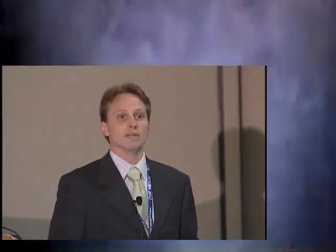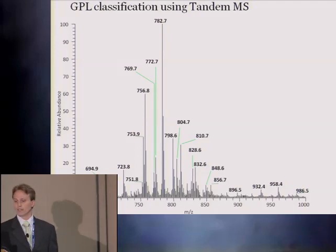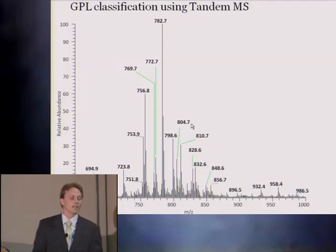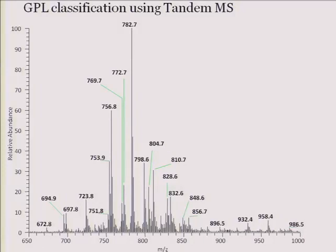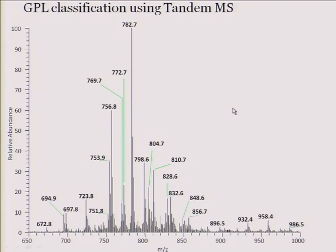I'm going to start with a mass spectrum — a single mass spectrum from one spot, a 100-micron spot on tissue. This is only showing the 650 to 1,000 mass range, which is the lipid region. There are a lot of different compounds changing here. What we do is isolate individual compounds using an ion trap, store that ion in the trap, and activate it to produce product ions, so we can isolate individual species.